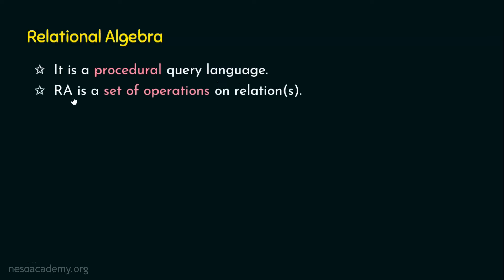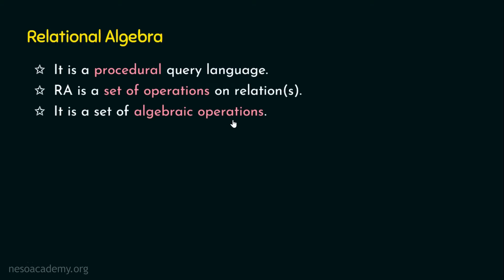What does relational algebra actually do? Basically, relational algebra is a set of operations on relations. This is like normal algebraic operations — it takes input and produces output. Here also, relational algebra works on relations, performs the operation, and gives the result as a relation. It is a set of algebraic operations. Just as addition and subtraction take values as input and produce output, relational algebra takes relations as input, performs the operation, and generates an output which is also a relation. In simple terms, relational algebra is a set of operations which takes one or more relations as input and produces a relation as output.